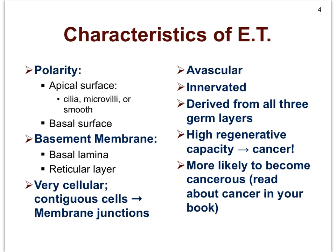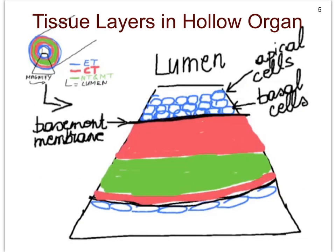This slide is a summary of all of those characteristics, and I'm going to use diagrams to explain and describe these various features. We will focus first on the features listed on the left-hand side, and then move on to the features on the right-hand side. Let's use these diagrams to get a better understanding of the typical arrangement of tissue layers in the body.